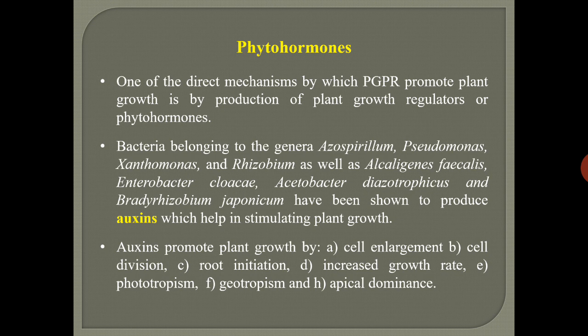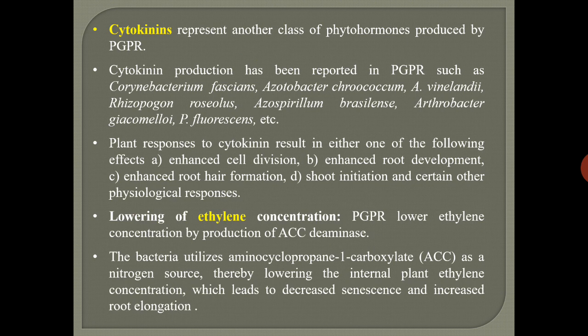When auxins are produced, they can induce plant growth by cell enlargement, cell division, root initiation, increasing growth rate, phototropism, geotropism, and apical dominance. Cytokinins are another important phytohormone required for better plant growth. Cytokinins improve plant growth by enhancing cell division, root development, root head formation, shoot initiation, and many other mechanisms. Few PGPR known to produce cytokinins include Corynebacterium fascians, Azotobacter chroococcum, Azotobacter vinelandii, Azospirillum brasilense, Arthrobacter giacomelloi, and Pseudomonas fluorescens.